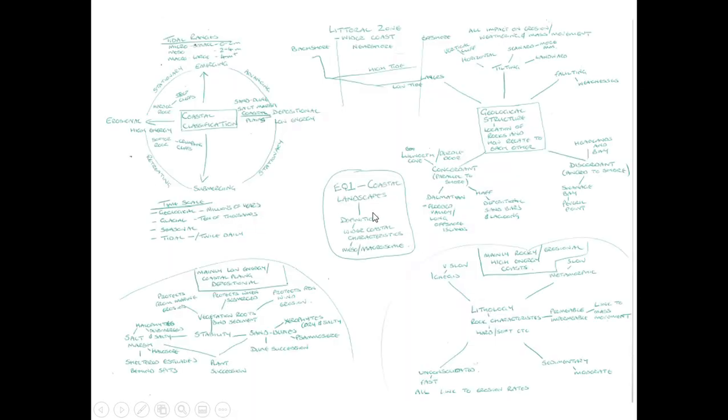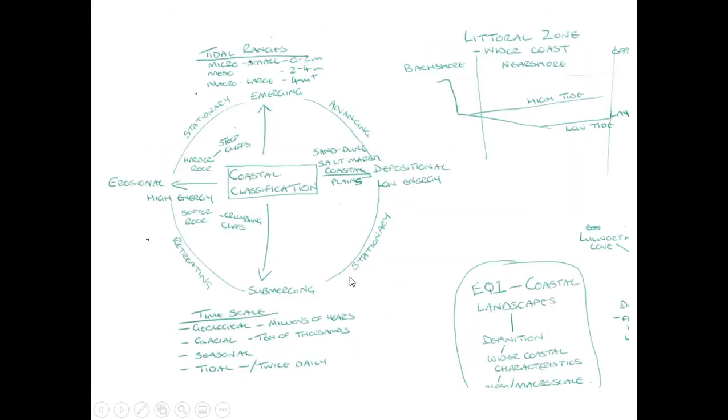So when we look at this, we can see we've got three main different areas: the coastal classification, the geological structure, and the depositional landforms.